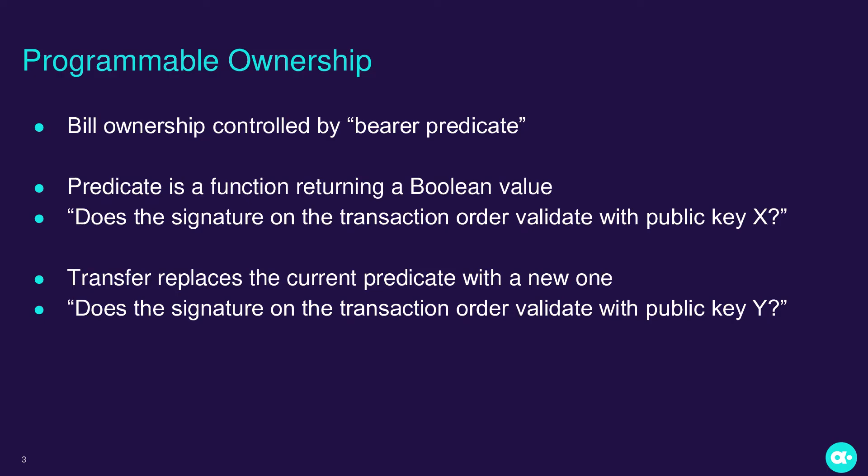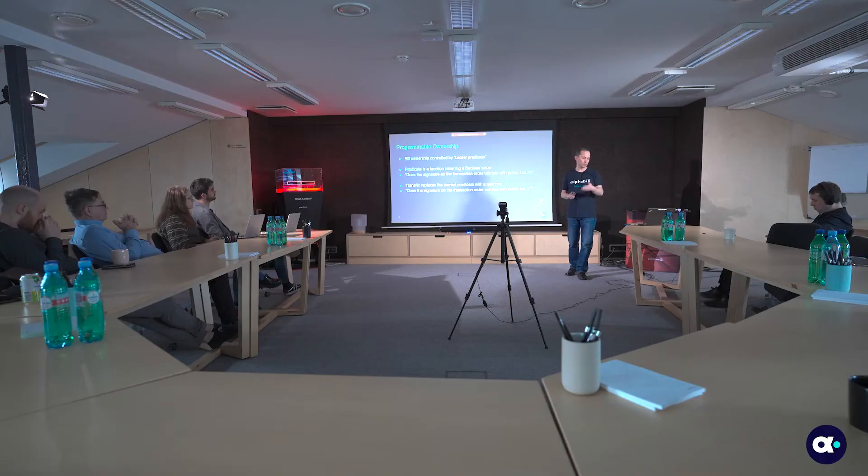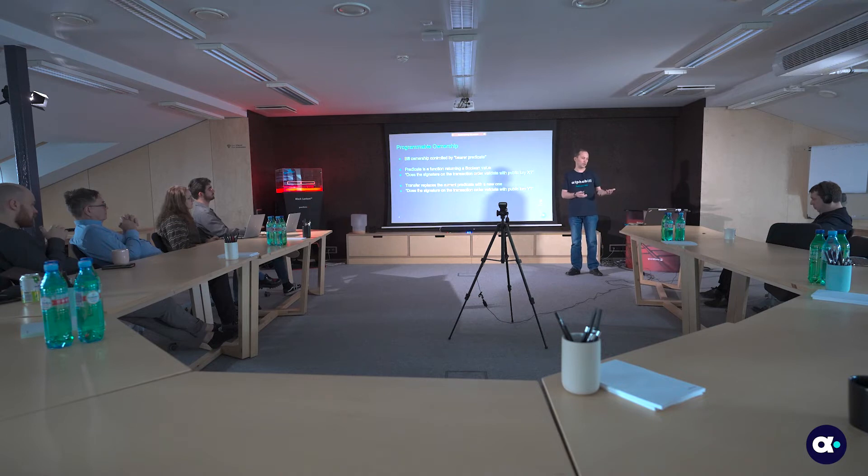Whoever has the corresponding private key can sign the transaction order and transfer the bill or use it for payment. Anyone who doesn't have it cannot provide input that satisfies the predicate and cannot transact. A transfer transaction then replaces the current bearer predicate with a new one. In the simplest case, when the bill was controlled by the bearer of the private key corresponding to public key X, the predicate can be replaced with a similar one referencing a different public key.